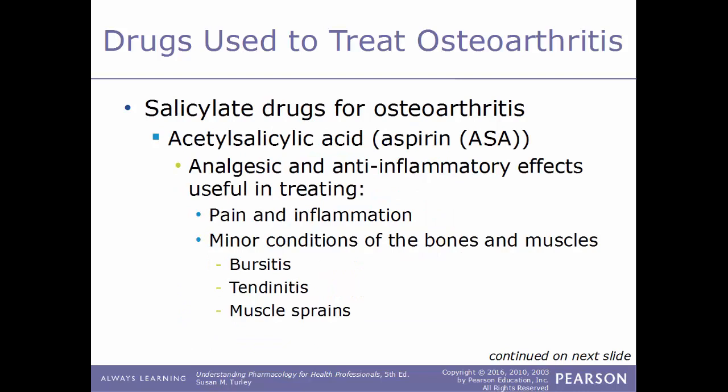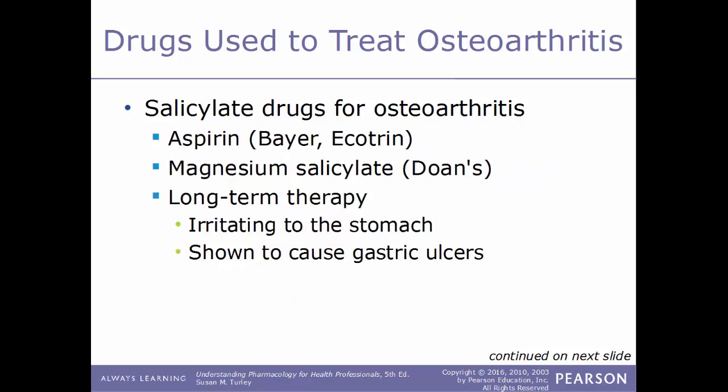Another type of drug used to treat osteoarthritis is salicylates. Examples include acetylsalicylic acid, more commonly known as aspirin. These have both analgesic and anti-inflammatory effects, treating both pain and inflammation. They are used for minor conditions such as bursitis, tendinitis, or muscle sprains. Common examples include aspirin brands such as Bayer and Ecotrin, and magnesium salicylate sold under the trade name Doan's. Long-term use can be irritating to the stomach and may cause gastric ulcers.